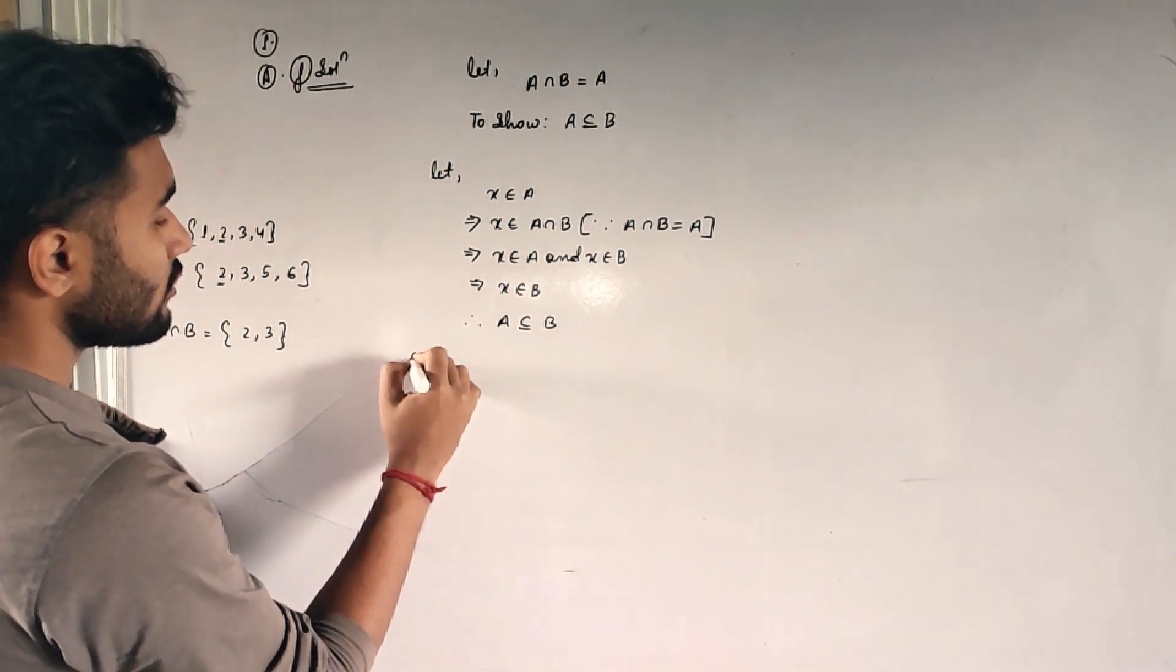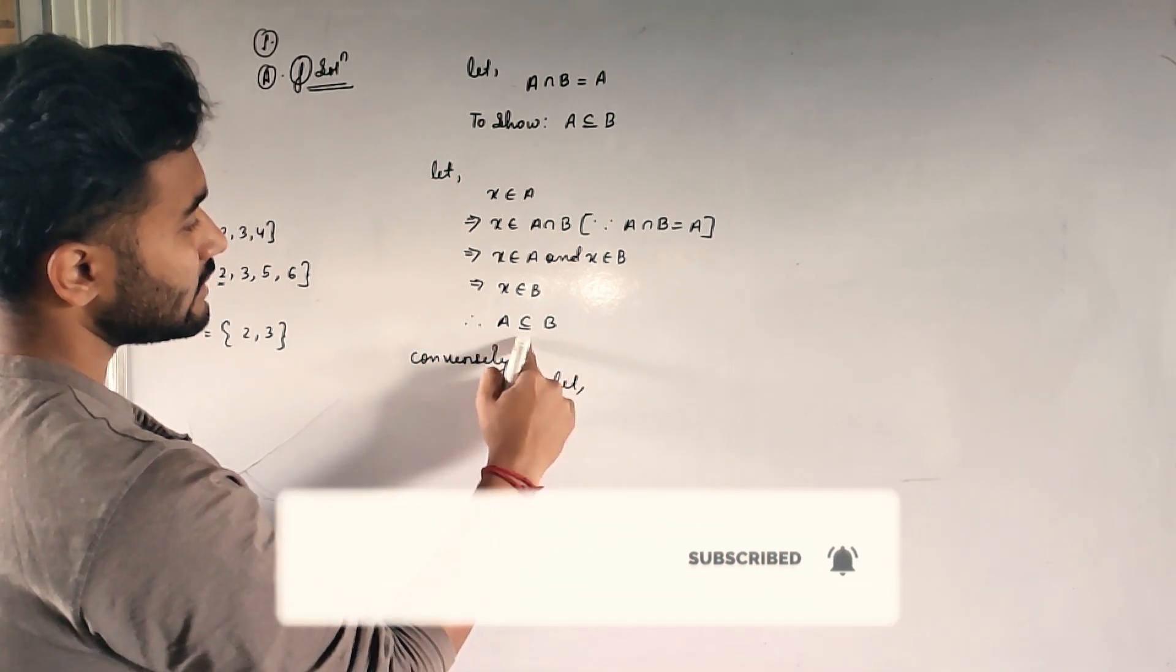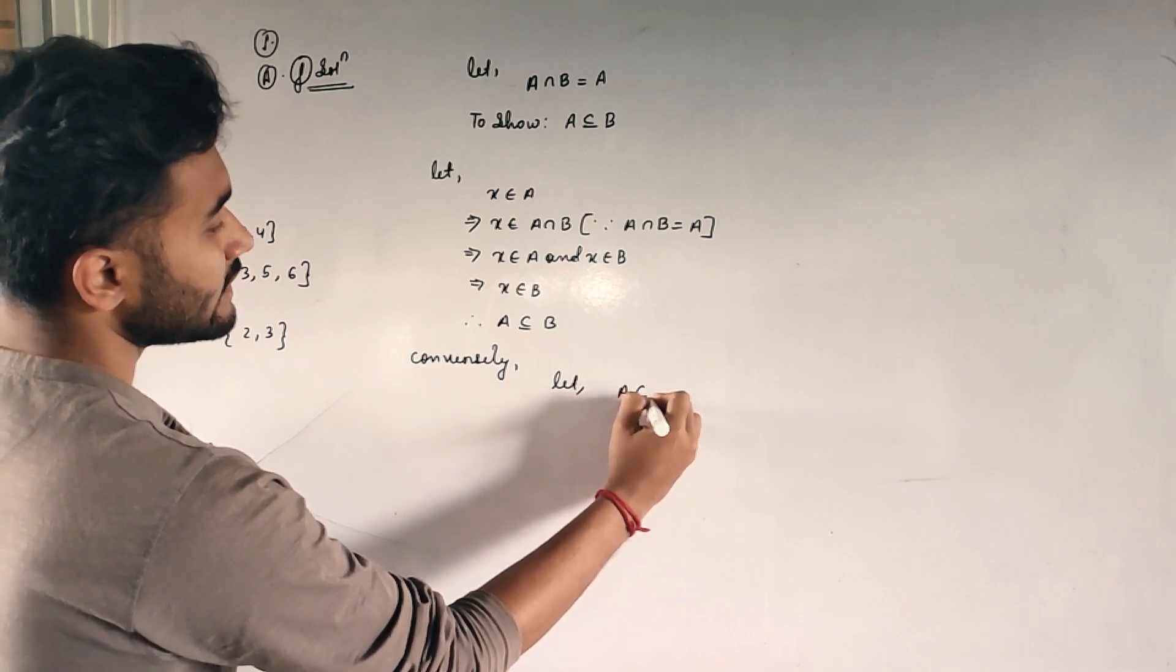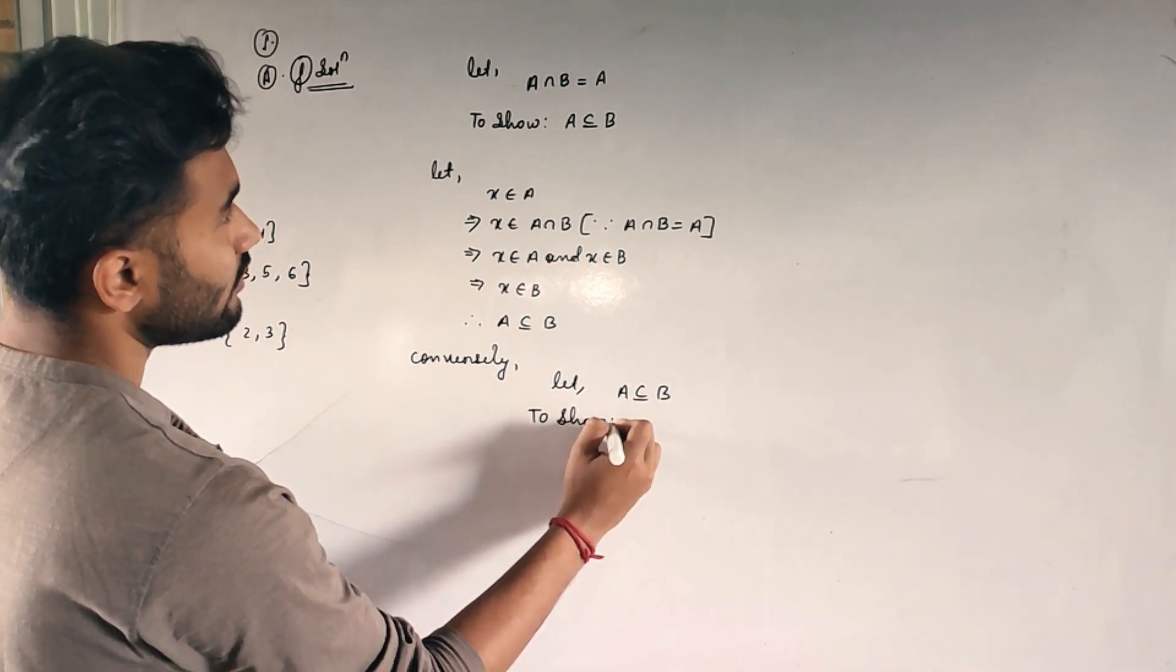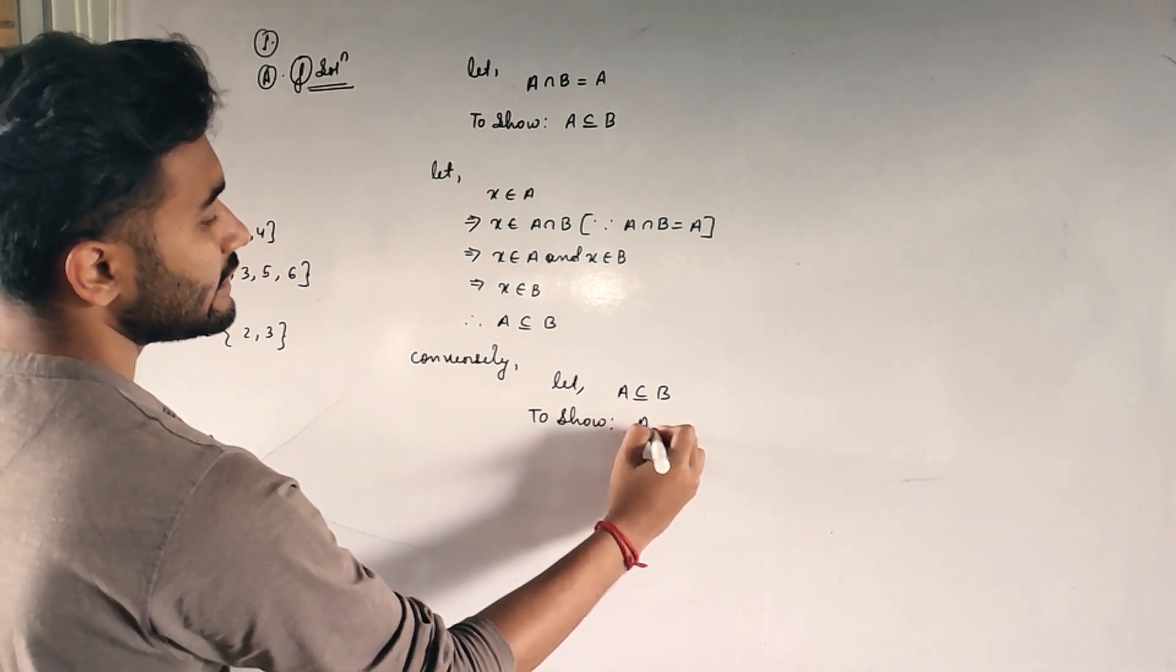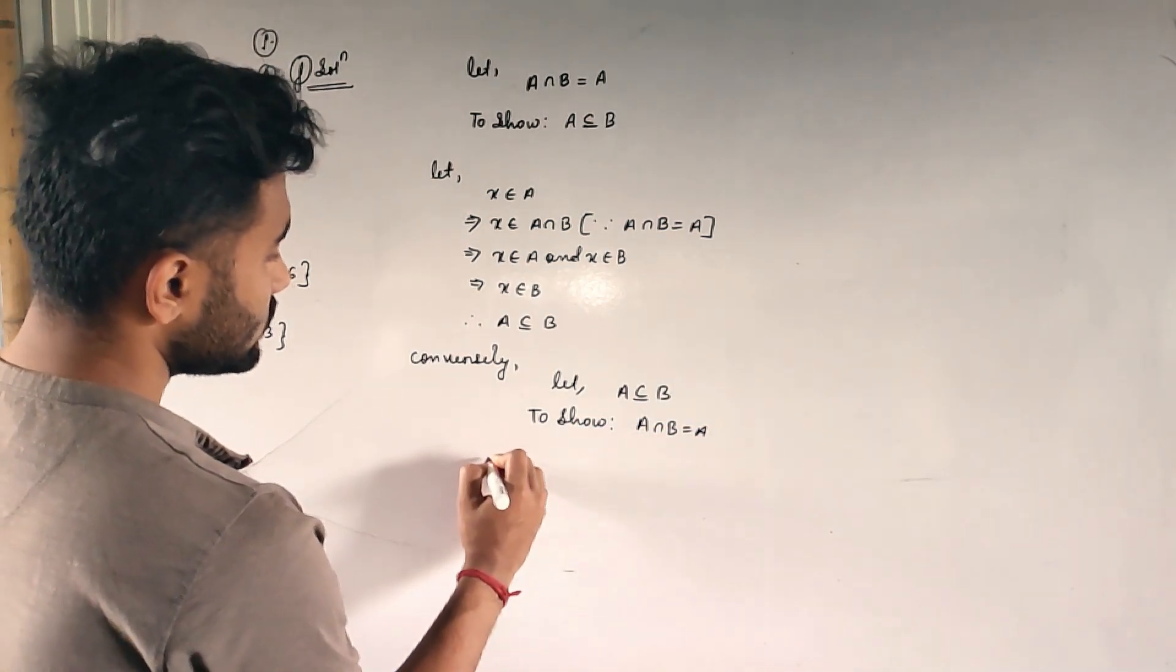Now the conversely part. Conversely, let, this will be my given. A is a subset of B and I have to show, what I have to show? A intersection B will be equal to what? A intersection B is equal to A.